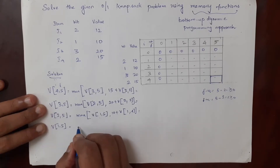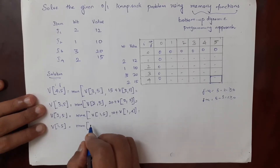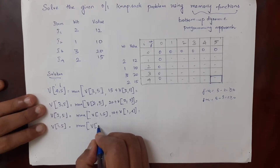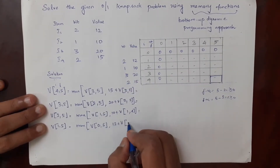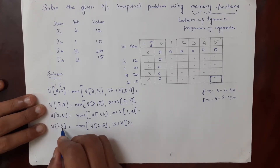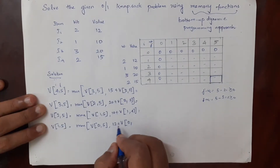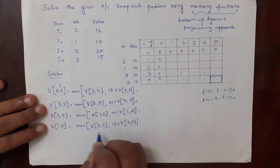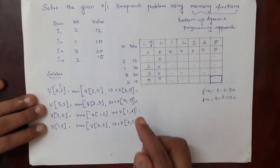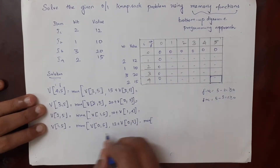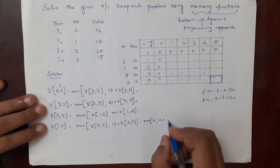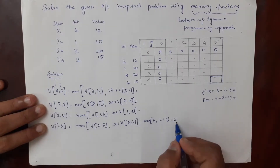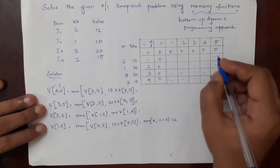For v of 1 comma 5, we use the formula: maximum of v(0,5), or value of the first item (12) plus v(0, j minus wi) = v(0, 5 minus 2) = v(0,3). Both 0 comma 5 and 0 comma 3 entries are 0, so maximum is 12. Therefore v(1,5) = 12, and we fill this entry with 12.